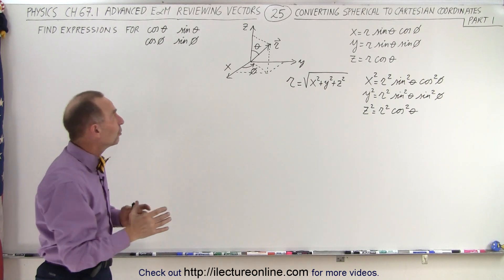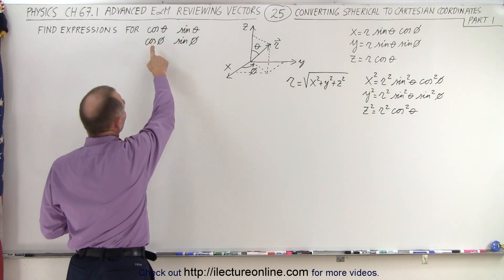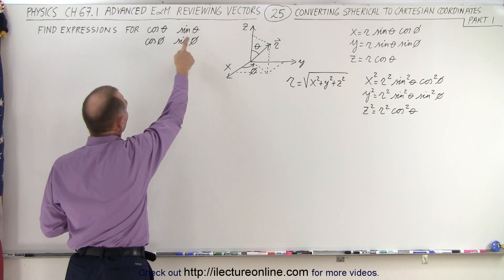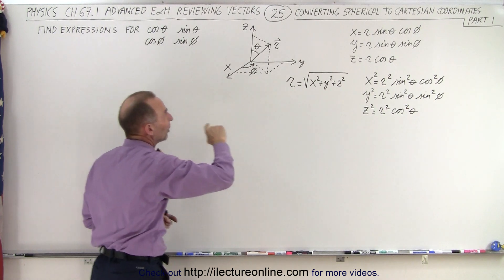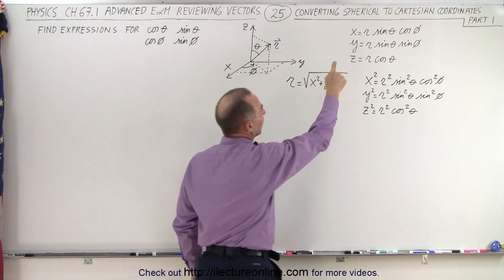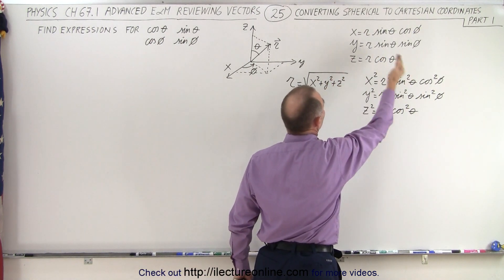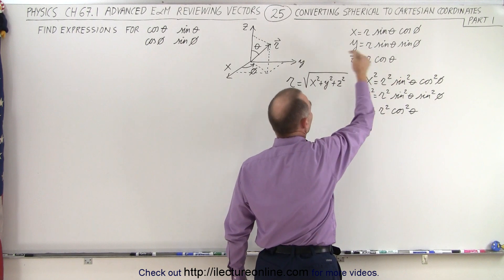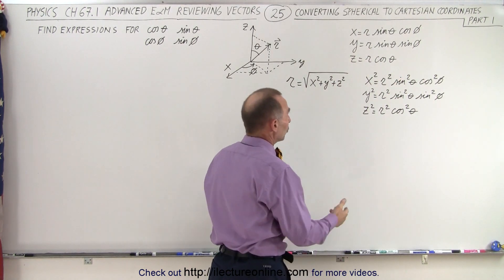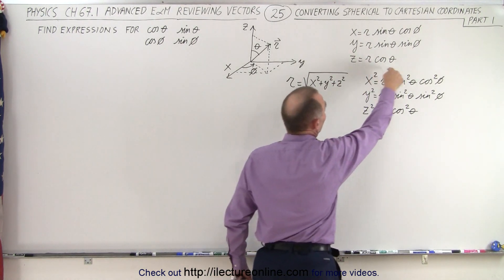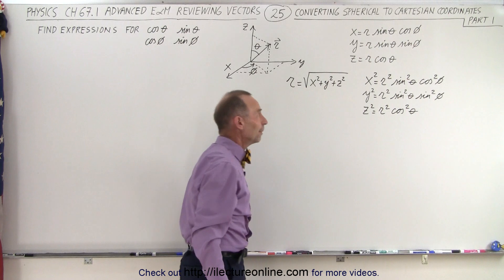So now what we need to do is find expressions for the cosine of theta, the sine of theta, the cosine of phi, and the sine of phi, so that when we plug those in we have a way to convert from spherical back to Cartesian coordinates.